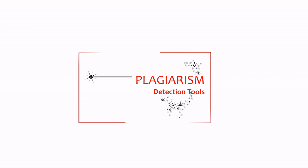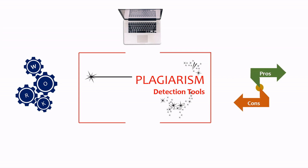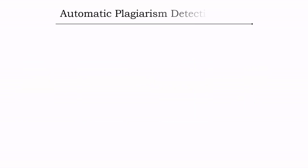Plagiarism detection tools detect plagiarized contents in a written document — in other words, they check the originality of a document. I will explain three important things: first, a brief understanding of the working mechanism of plagiarism detection tools; second, an overview of different tools available in the scholarly market; and finally, the merits and demerits of these tools.